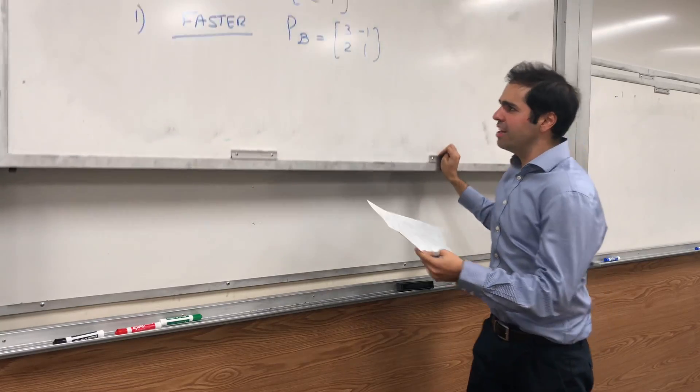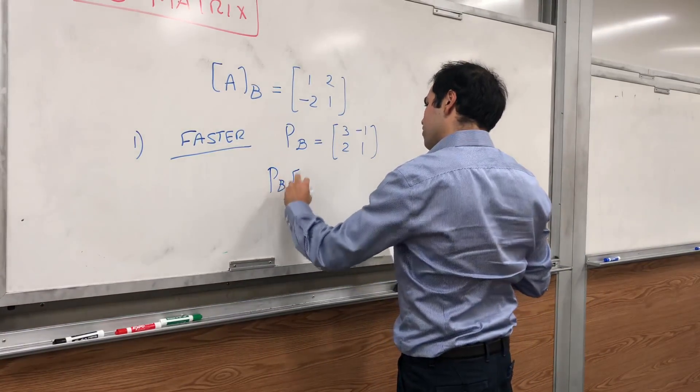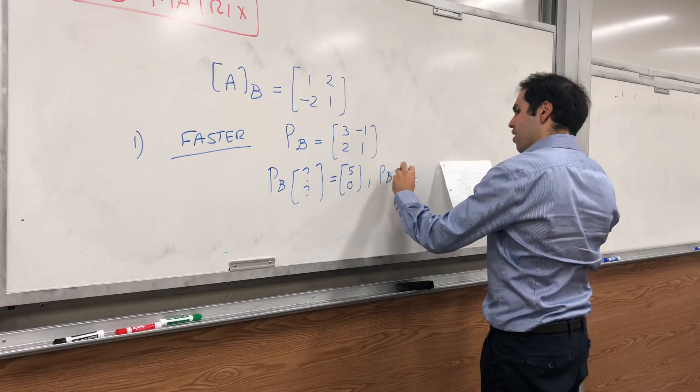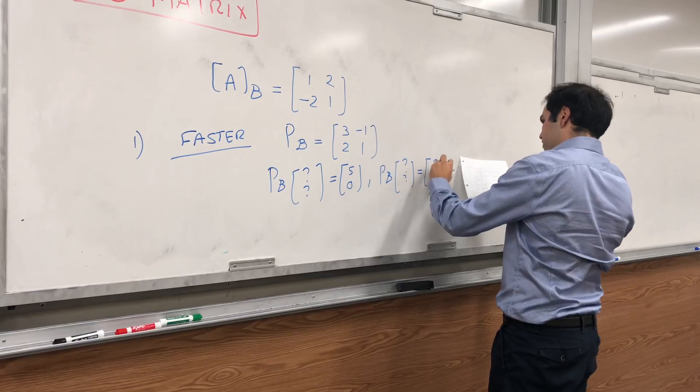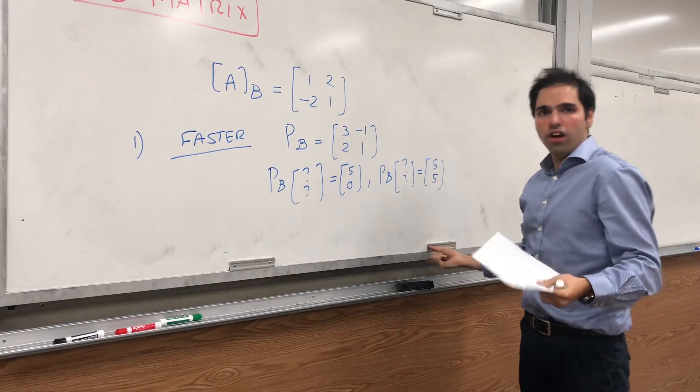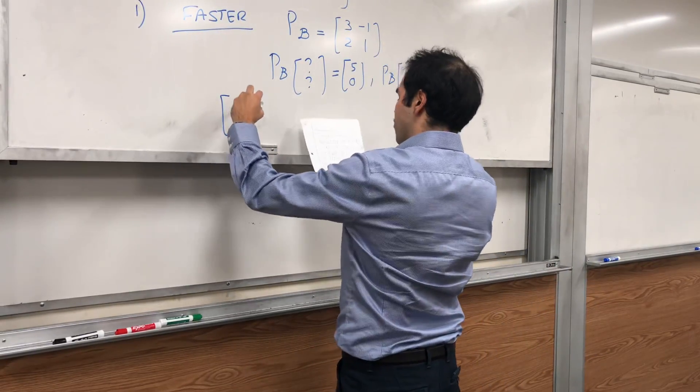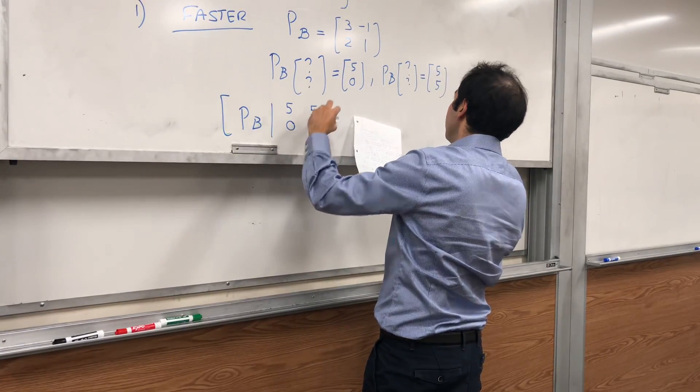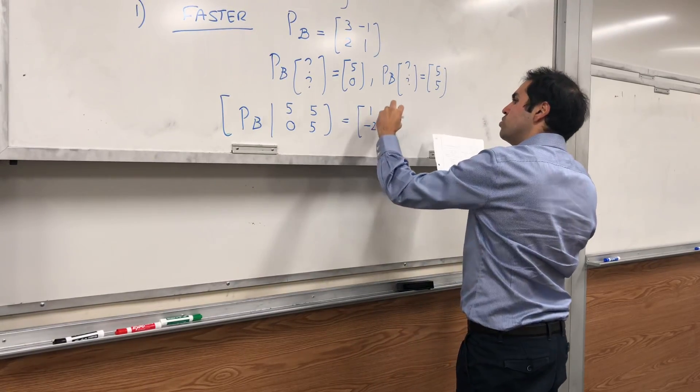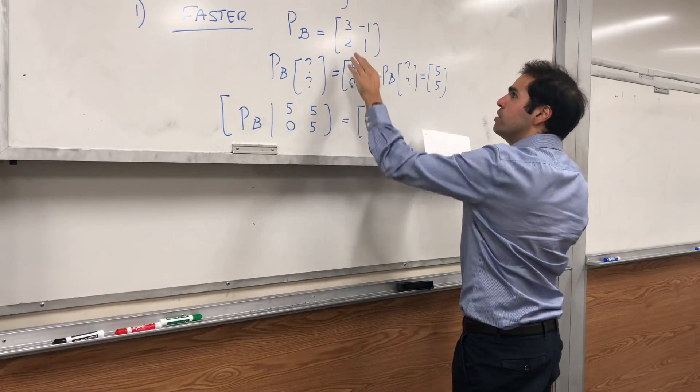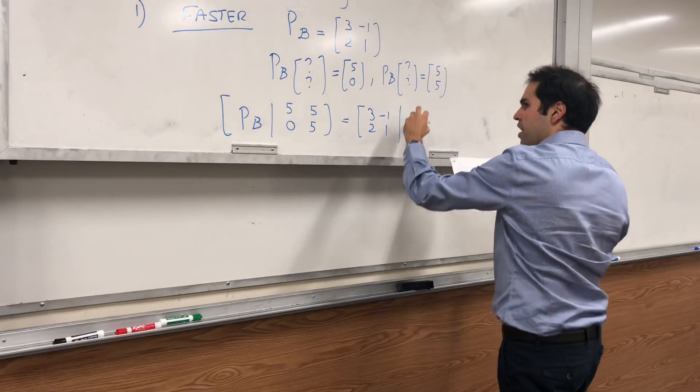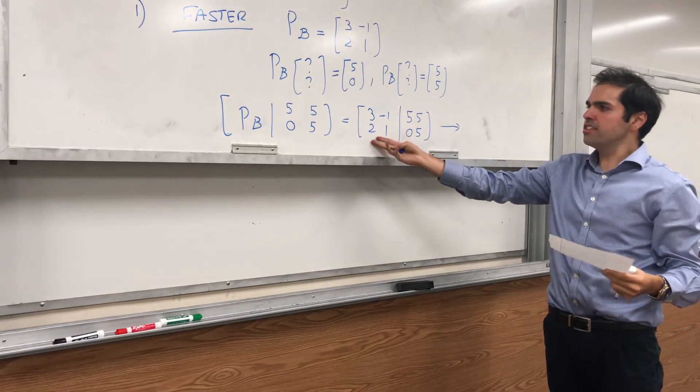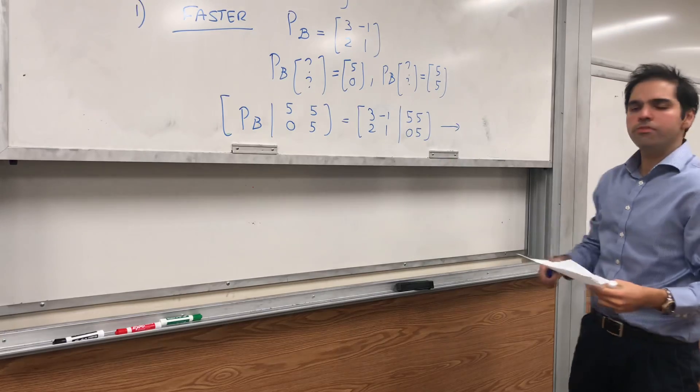So really, all we needed to find was the following, namely P_B of what, what, what, what gives you (5, 0), and P_B of what, what gives you (5, 5). And so really, all you needed to do is to take P_B in the first column and A of the first vector, A of the second vector, which is [3, -1; 2, 1 | 5, 5; 0, 5], and just row reduce it so that the left-hand side is the reduced row echelon form, which here means the identity matrix.